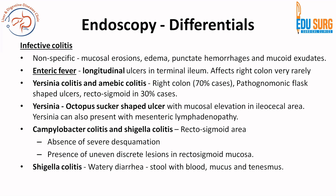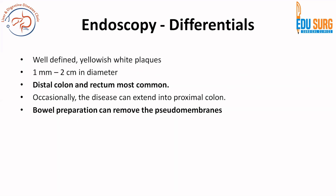In amoebic colitis, the right colon is the most commonly involved site, and flask-shaped ulcers are classical. The rectosigmoid is involved in 30% of cases. Yersinia colitis presents with octopus sucker-shaped ulcers with mucosal elevation in the ileocecal area, and can also present with mesenteric lymphadenopathy. Campylobacter and shigella colitis can affect the rectosigmoid area with very uneven discrete lesions in the rectosigmoid mucosa. Shigella colitis presents with watery diarrhea, stool with blood and mucus, and tenesmus.